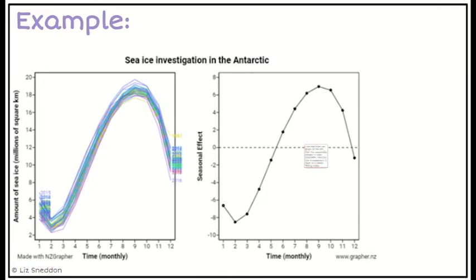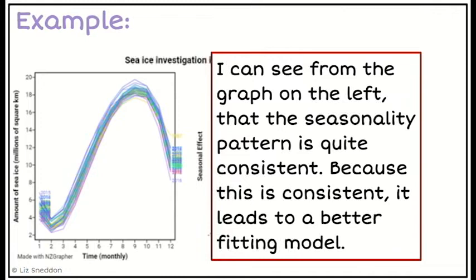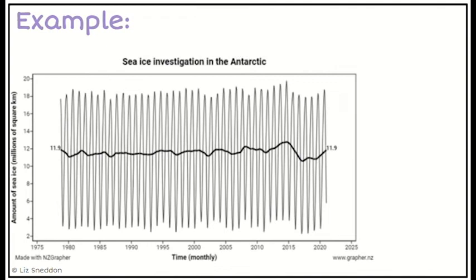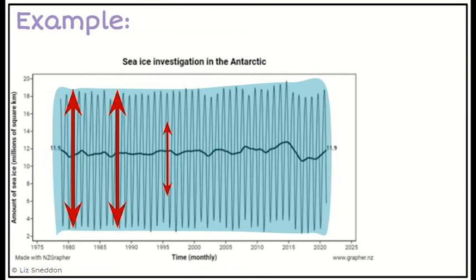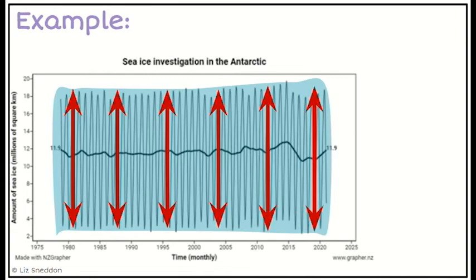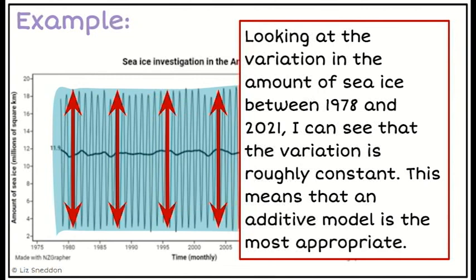Then I look at the seasonality and think: is that seasonality consistent? Looking at the graph on the left, I can see the seasonality pattern is consistent, so because we have a consistent pattern the model is going to fit better — which is exactly what we can see visually. Last, I think about the variation: as time increases, the variation stays pretty constant. Because it's pretty consistent, that tells us the additive model is the most appropriate one, and that's the model that's been used.